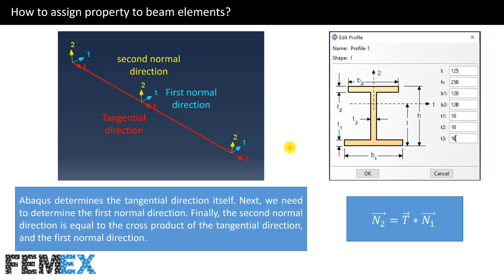The final step is defining normal directions for the wire part. As you can see, there are two vectors: Vector 1 and Vector 2. These vectors are perpendicular to the tangential direction of the wire part. We call them first normal direction and second normal direction. This is the tangential direction, this is the first normal direction, and this is the second normal direction. Abaqus determines the tangential direction itself. Next, we must determine the first normal direction. Finally, the second normal direction N2 is equal to the cross product of the tangential direction T and the first normal direction N1.